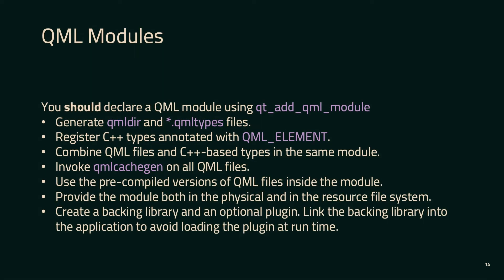You should absolutely be using this functionality — the modern way of creating QML modules — which is Qt add QML module. Previously in Qt Quick you had to do a lot of things manually: creating QML dirs, writing QML register type. Well, all of that's done for you if you're using the new pattern with QML_ELEMENT and Qt add QML module in CMake.